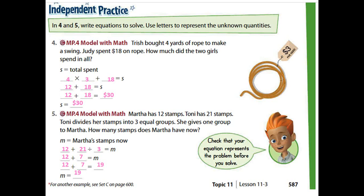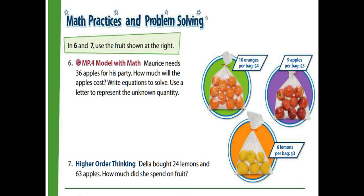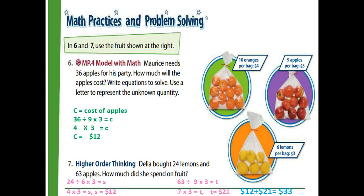Next, question six. Looking at the pictures we see: a bag of ten oranges costs four dollars, a bag of nine apples costs three dollars, and a bag of six lemons costs three dollars. The question: Morris needs thirty-six apples for his party — how much will the apples cost? Write equations to solve, using a letter to represent the unknown quantity. I'm taking C as equal to the cost of the apples.